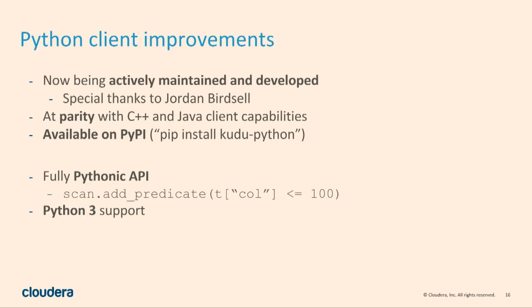Another area we spent a lot of work on over the last year is the Python client. This originally was an experimental thing we threw out to see if people liked it. A guy named Jordan Birdzell, who was previously at State Farm, picked this up and ran with it. He made this very production-ready, with parity with the C++ client. You can do pretty much all the operations from Python. It's especially popular with data science people who want to run PySpark or any simple app from Python.